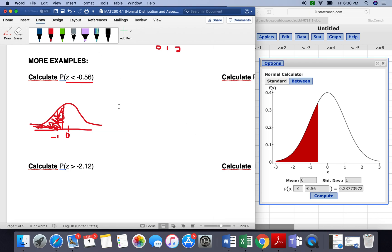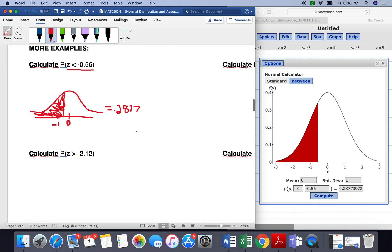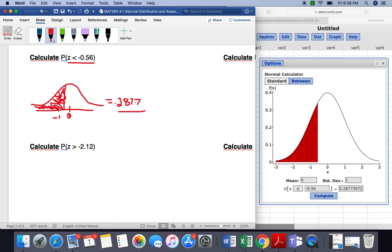And we end up with 0.2877, and we always want to round these to four places.